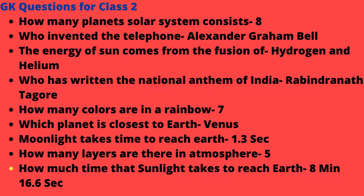GK questions for Class 2. How many planets does the solar system consist of? 8. Who invented the telephone? Alexander Graham Bell. The energy of the sun comes from the fusion of hydrogen and helium.